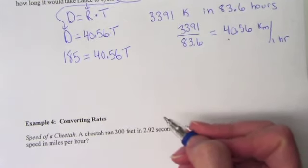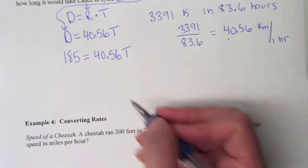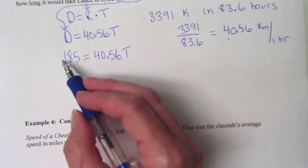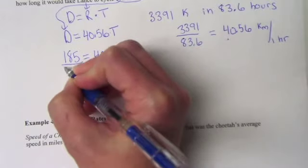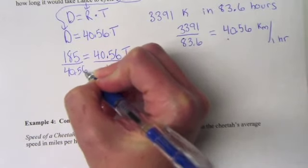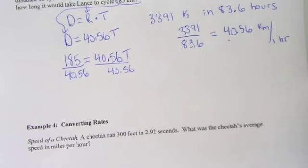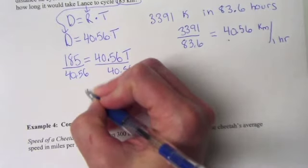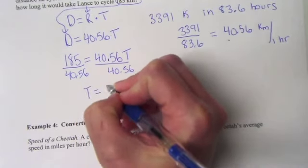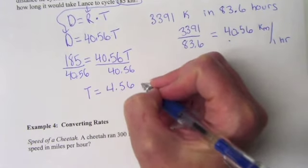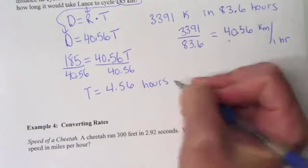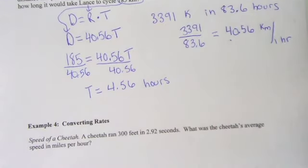So now it's just like solving an equation. We have the term with the variable on one side, the number by itself on the left. So we can divide both sides by 40.56 and we will get that time. So if we take 185 divided by 40.56, our time gives us about 4.56 when we're talking hours. So approximately 4.5 hours it will take him to cycle 185 kilometers.